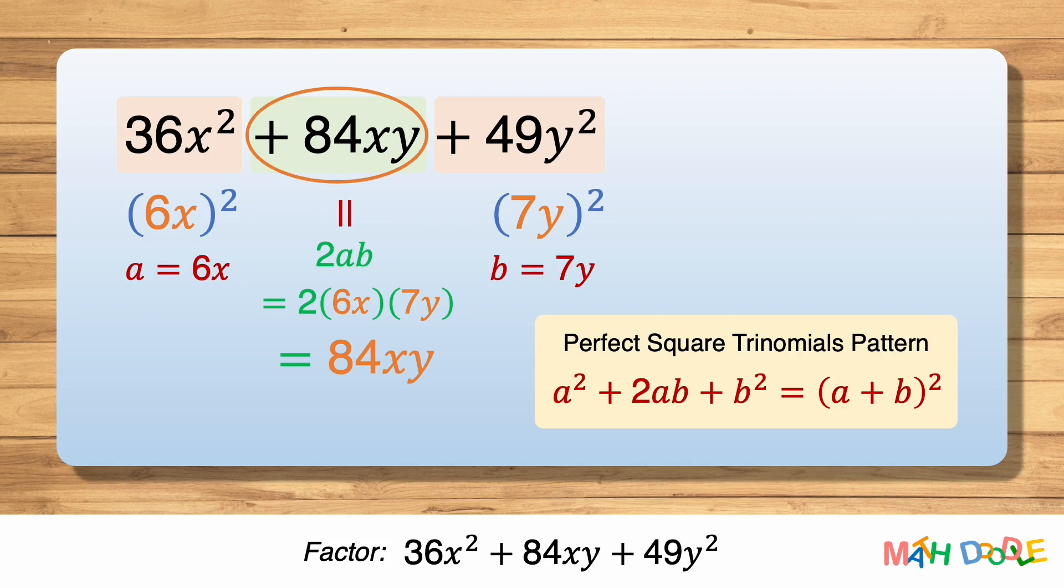Now let's substitute 6x for a and 7y for b. So the trinomial can be factored into 6x plus 7y squared.